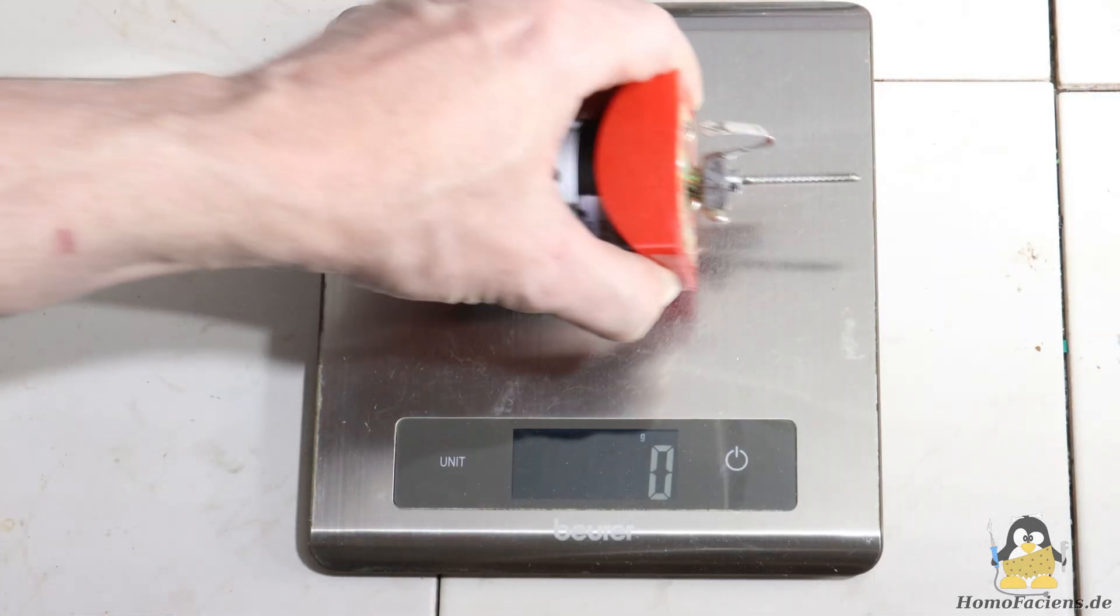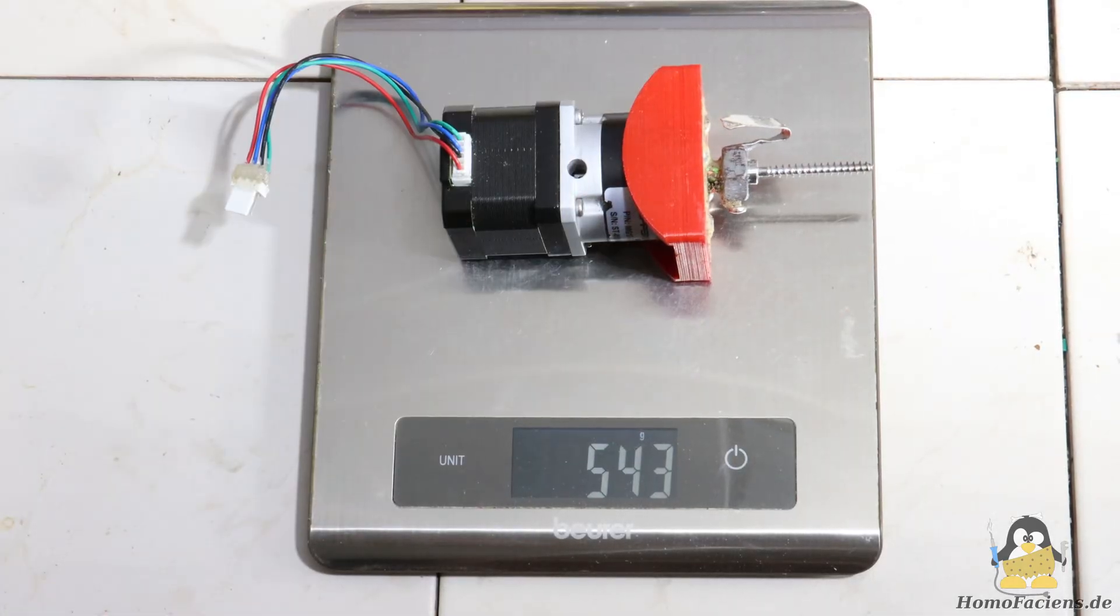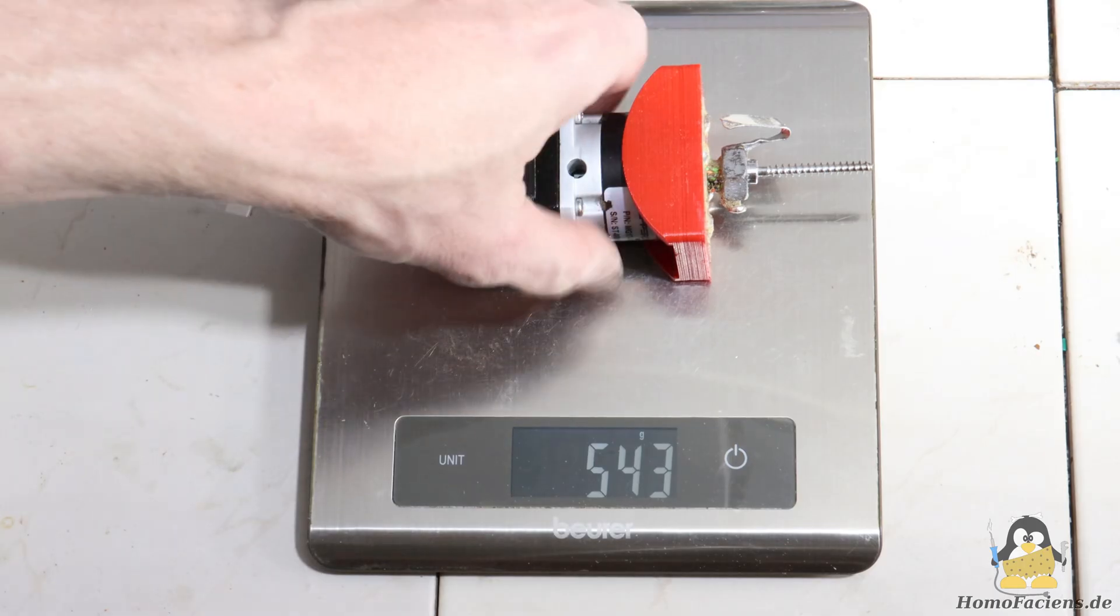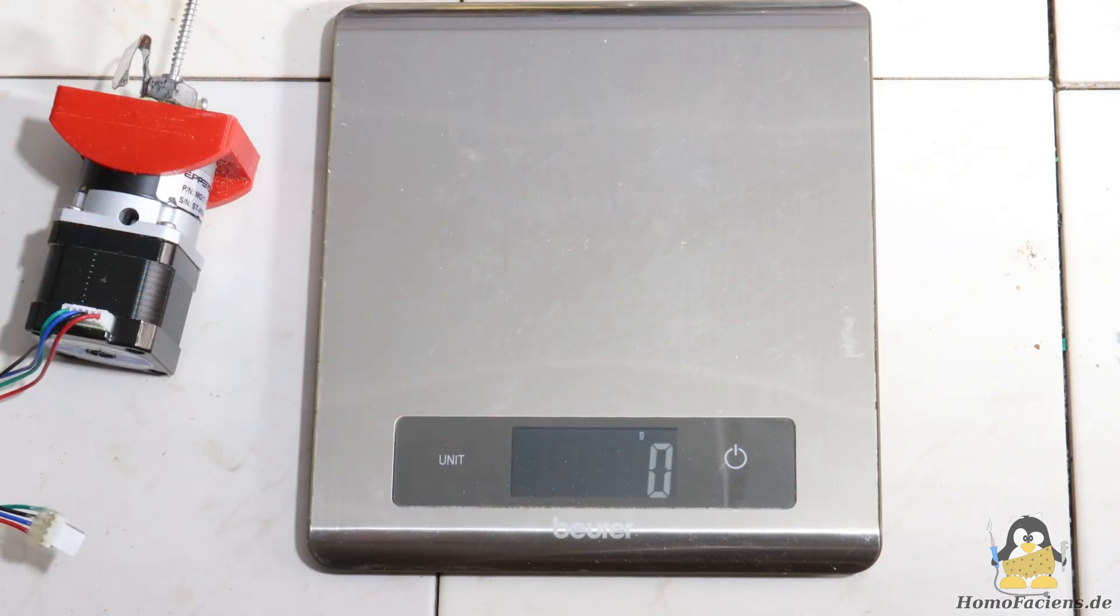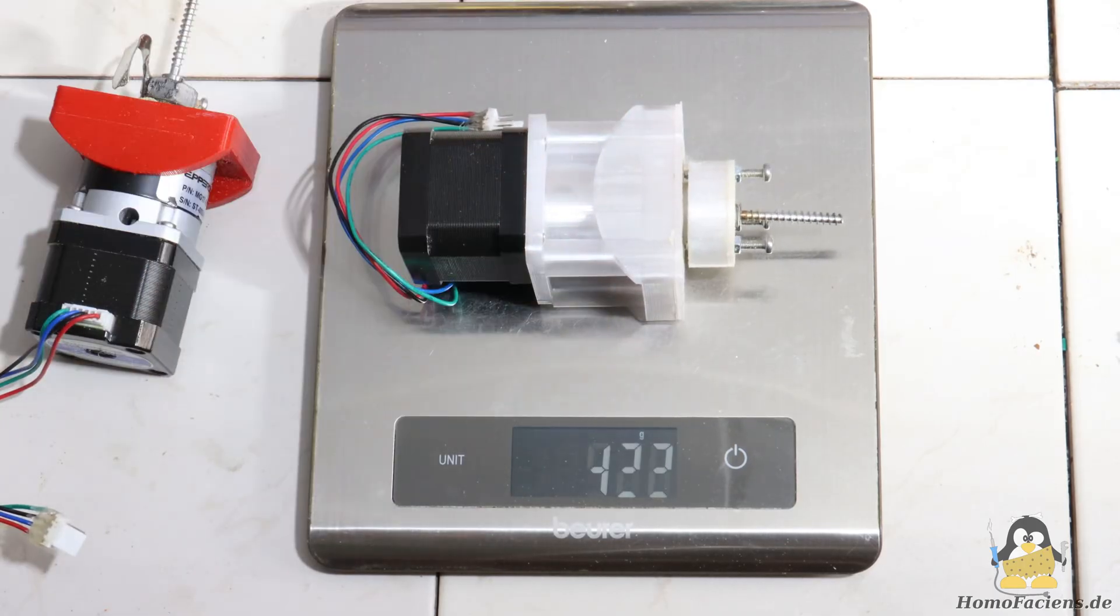The printed gearbox is barely larger than the metal counterpart and in terms of weight, there is a difference of 121g in favor of the plastic version.